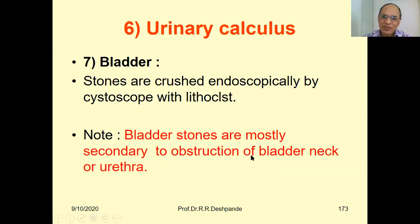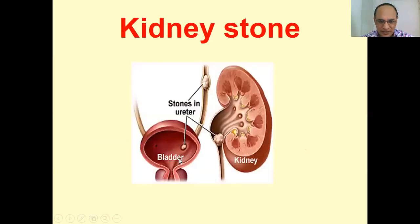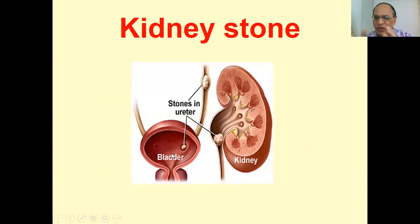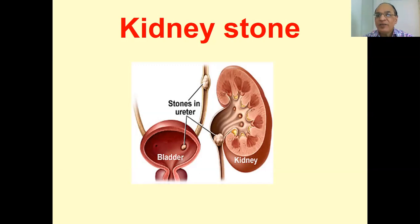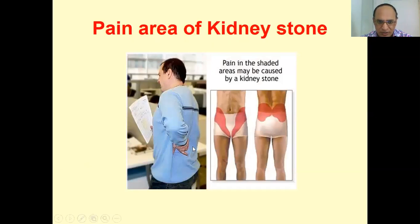The key mantra is: obstruction → stagnation → stone. When the bladder neck is obstructed — by a prostate gland, urethral stricture, gonococcal infection, or venereal disease — urine stagnates for a longer time, becomes more acidic and saturated, and the molecules solidify into stones.